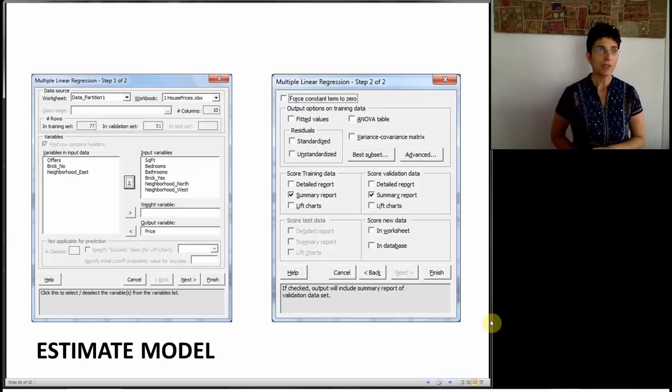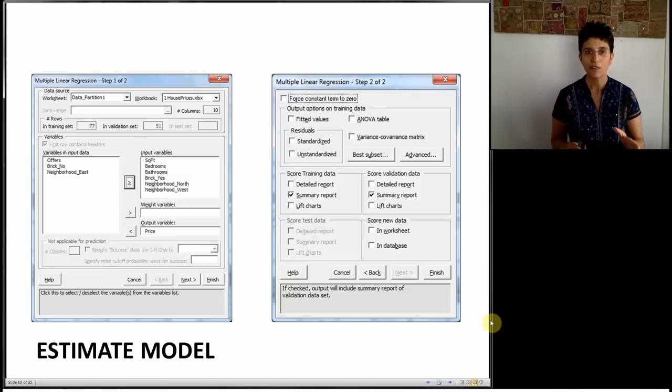The next step is to run a linear regression. You can see in this screen the menus in Excel Miner, there are two menu screens. The first one is I'm choosing the worksheet of the partition data called data underscore partition one. I'm including the output variable to be price, and I'm including all the input variables except for offers, which we said we should not be using. Notice that also here I need to create dummies if I have categorical variables. It's the same as in descriptive modeling. Once I do this, the next screen that I get allows me again to choose fitted values, ANOVA, and notice that right now these fitted values, ANOVA table, and residuals are not checked. The default is not to obtain those metrics. And the reason is, again, in predictive uses, these are less interesting.